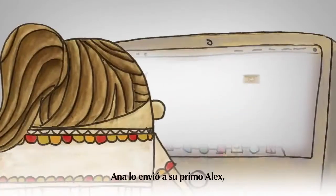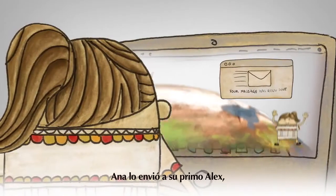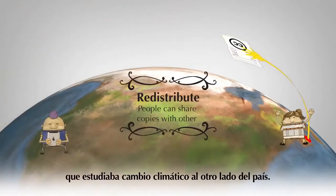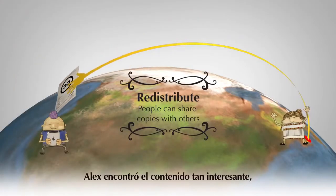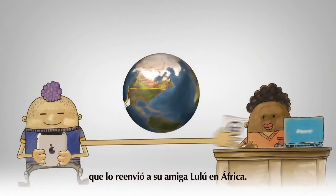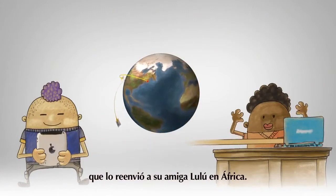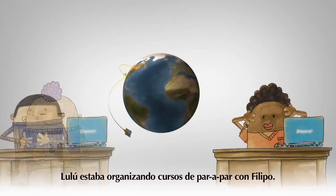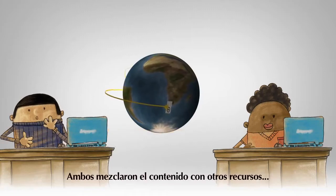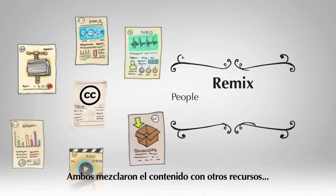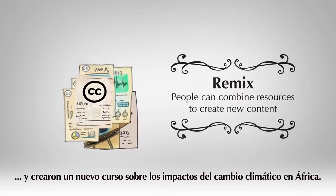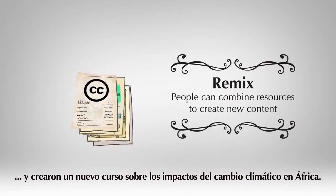Anna sent the course's content across the country to Alex, who was studying climate change. Alex found it so interesting that he forwarded a copy to his friend Lulu in Africa. Lulu was developing peer-to-peer courses with Philip, so they remixed the content with other resources and created a new course about the impacts of climate change in Africa.